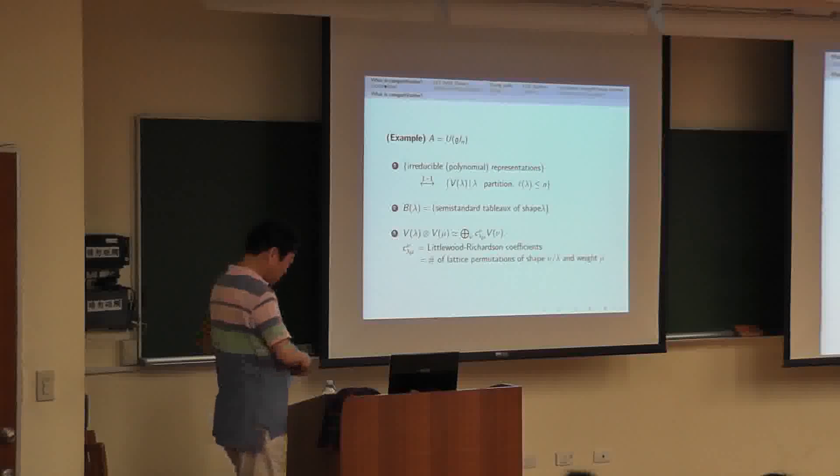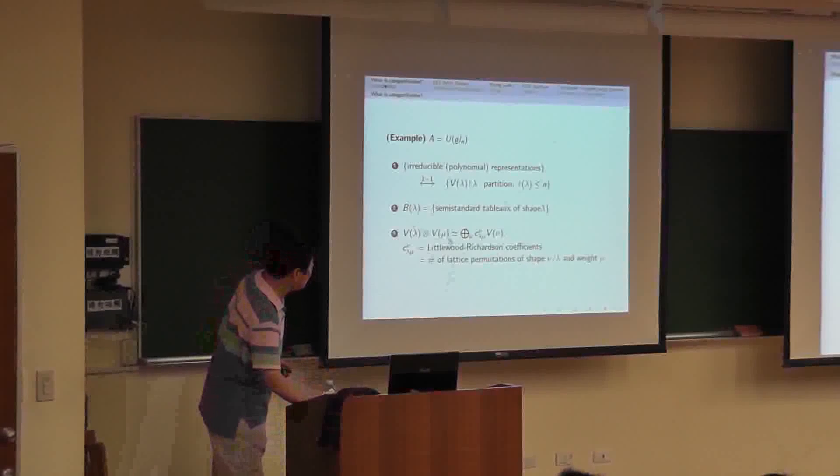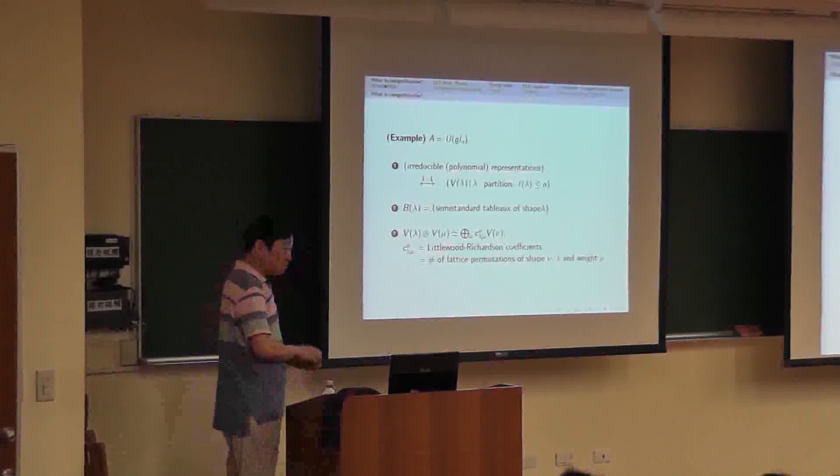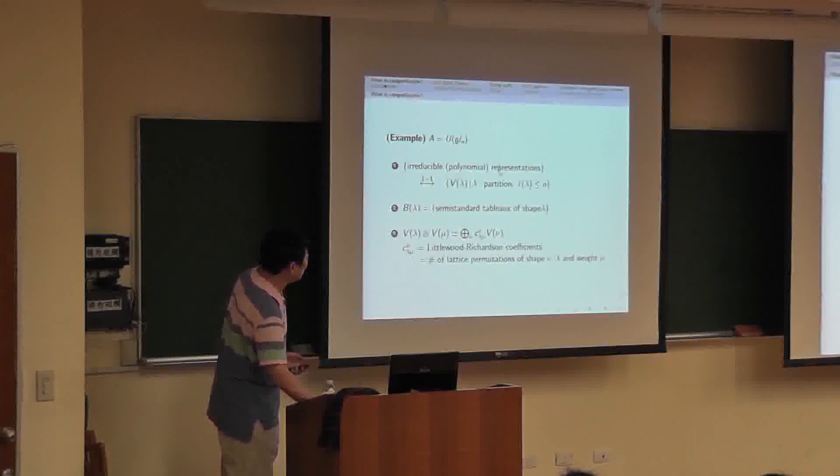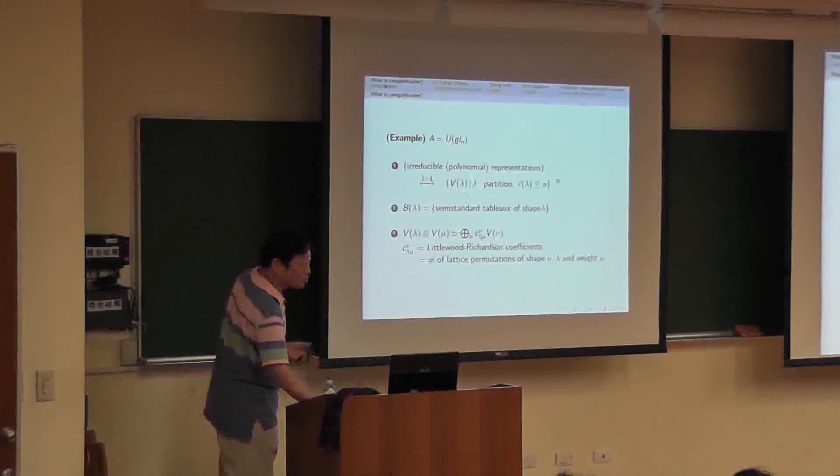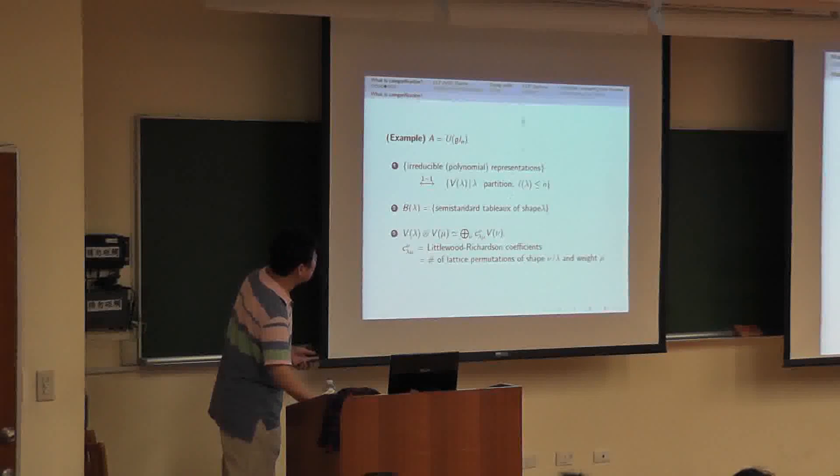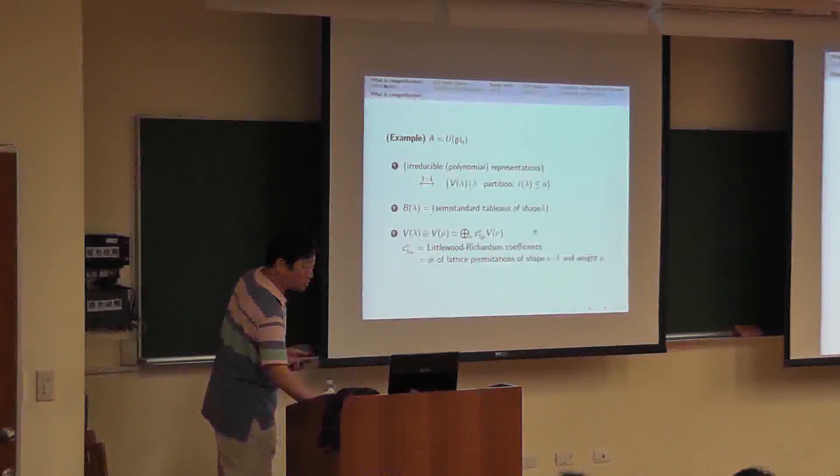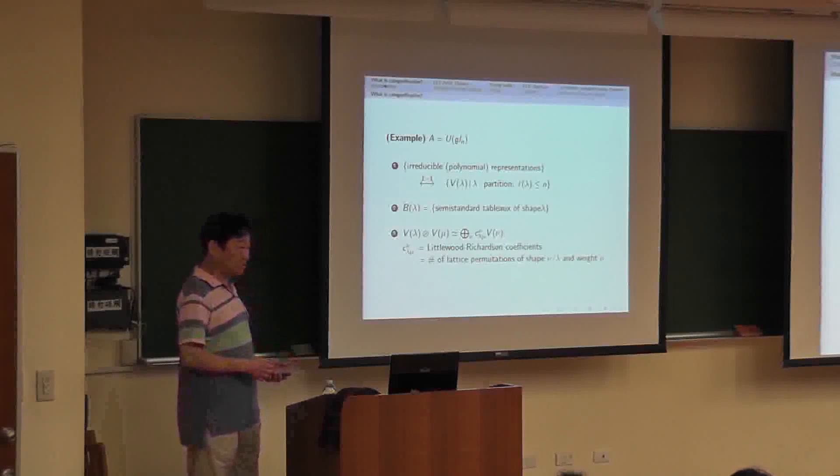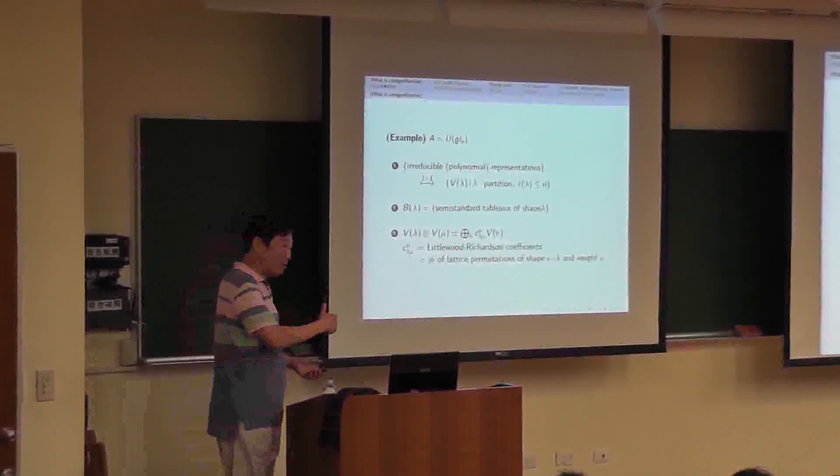A student asks: Can you explain what is the tableau of shape lambda? So, maybe you can write down something. Suppose we have a Young diagram like this. Then in each row the entries are weakly increasing. Entries means you can choose one term, and in each column the entries are strictly increasing. If the entries are increasing in both ways, then the tableau is going to be standard.